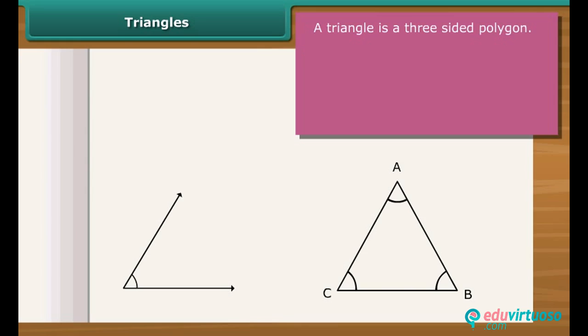In the given figure, ABC is a triangle. AB, BC and CA are three sides. A, B and C are three vertices. Three angles are angles CAB, ABC and BCA.